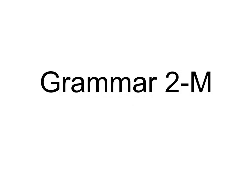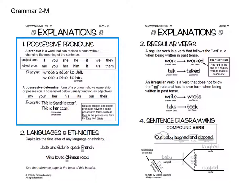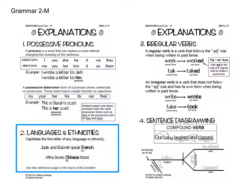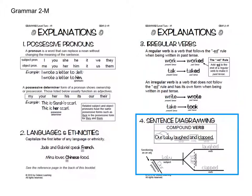In this video, we'll go over the concepts found in Grammar 2M. These concepts include possessive pronouns, languages and ethnicities, irregular verbs, and sentence diagramming.